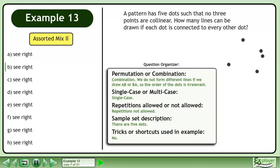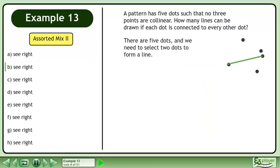Pause the video and organize the information about this question. There are five dots, and we need to select two dots to form a line. There are five choose two equals ten lines that can be formed.